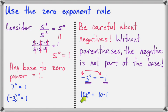So 10x to the 0 becomes 10 times 1, which simplifies to 10. x to the 0 is 1, but the 10 is still there, and the final result is 10.